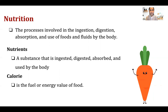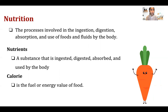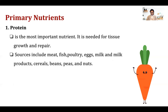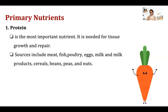Nutrition is the process involved in the ingestion, digestion, absorption, and use of foods and fluids. All of our patients need nutrients so they can regain strength and recover as fast as possible. Nutrients are substances that are ingested, digested, absorbed, and used by the body. Our gastrointestinal system is responsible for these nutritional processes. Calorie is the fuel and energy value of each food — very prominent when a patient has diabetes and the dietician specifies a caloric requirement.